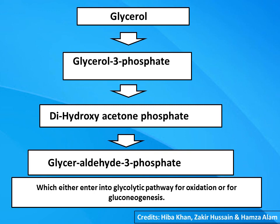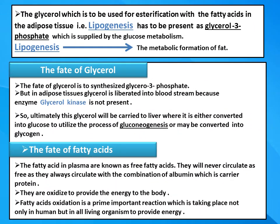Glycerol is converted into glycerol-3-phosphate and then into dihydroxyacetone phosphate. From glycerol-3-phosphate it can either enter the glycolytic pathway for oxidation or for gluconeogenesis. The glycerol used for esterification with fatty acid — that is, lipogenesis in the adipose tissue — must be present as glycerol-3-phosphate, which is supplied by glucose metabolism, as discussed in the previous lecture.